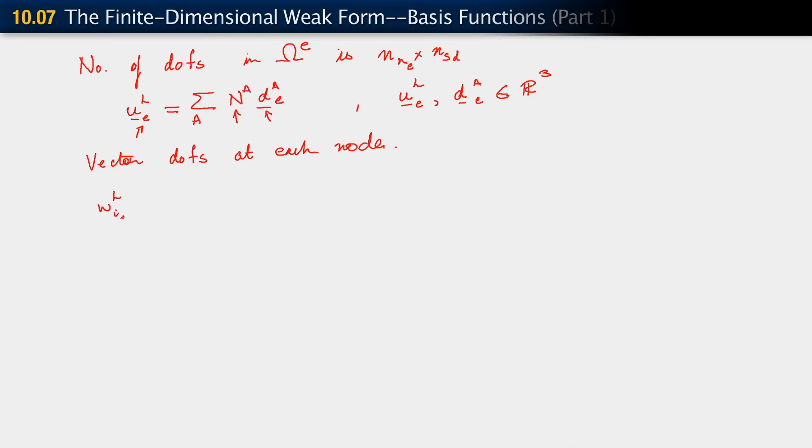And then, of course, it's the same thing for the weighting function. We have w_h^i,e equals sum over A N^A c_a^i,e using coordinate notation, where we know that i equals one to number of spatial dimensions. And using direct notation, that would be w_h,e equals sum over A N^A c_a,e. As we noted above, w_h,e and c_a,e are 3D vectors, vectors in R^3.